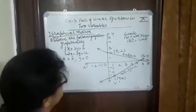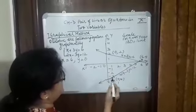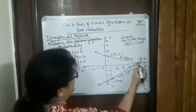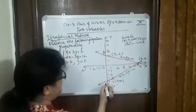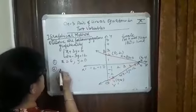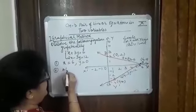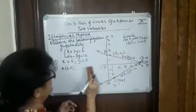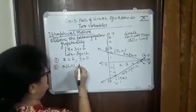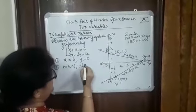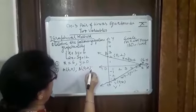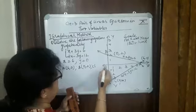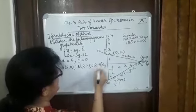Second was find the coordinates of the triangle formed by these lines and y-axis. So this is the triangle formed. We'll name it A, B, C. So second is coordinates of triangle are A(6,0), B(0,2), and C(0,-4).